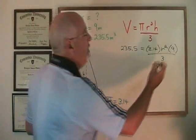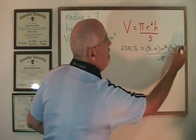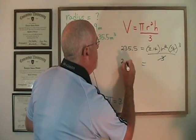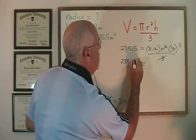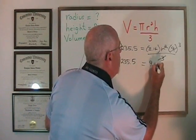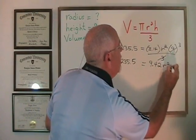The first thing I'm going to do is simplify 9 divided by 3, which is equal to 3. And then 3.14 times 3 is equal to 9.42. And we still have our r squared.